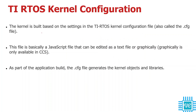TI RTOS kernel configuration: the kernel is built based on the TI RTOS kernel configuration file. Every RTOS has its own configuration file to enable or disable different features. For example, you can enable or disable semaphores using the config file. In TI RTOS, they provide a file called .cfg, which is responsible for configuring the TI RTOS. This is basically a JavaScript file, and you can edit it using text format or a graphical format. We will see both.